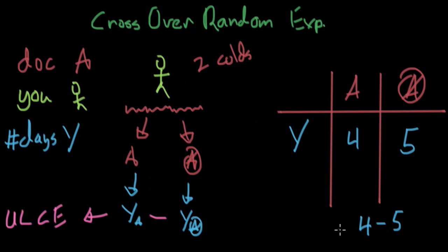So you'd simply take four minus five. And this would give you the unit level causal effect of minus one. So going to the doctor basically meant that you got sick or got well one day earlier. So that's pretty nice. The problem here is that this still contains lots of assumptions. The assumptions are that these two colds are as similar as possible, that there's no confounding variables with these two colds.